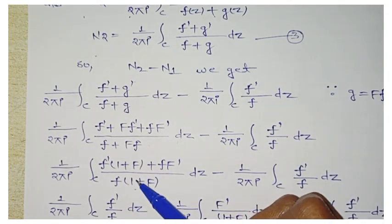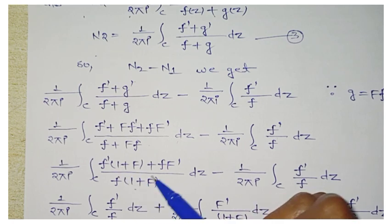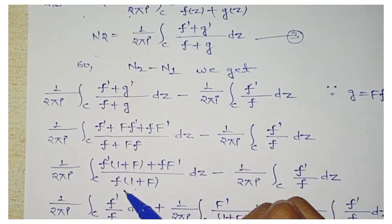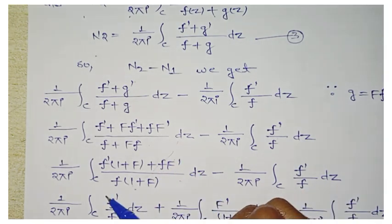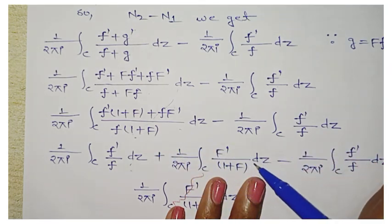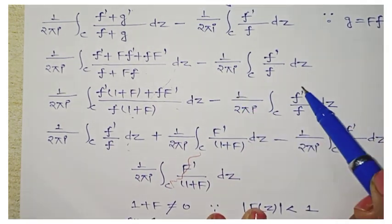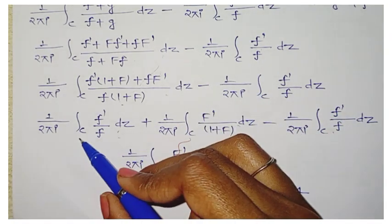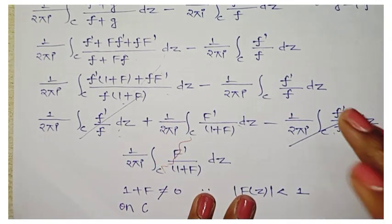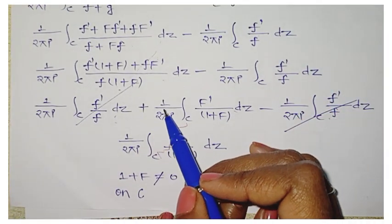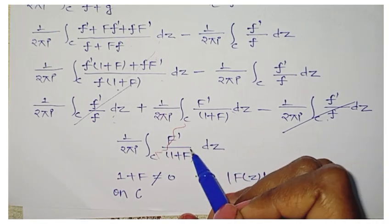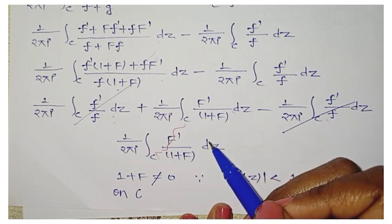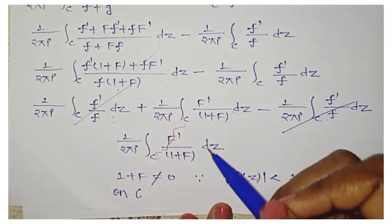Since the denominator is (1+F), we can write it under both terms. When (1+F) is in the denominator of one term, (1+F) cancels, giving f'/f · dz. In the other term, small f cancels, giving f'/(1+F) · dz. The two identical terms cancel out, leaving: (1/2πi) ∮ F'/(1+F) dz. Note that (1+F) must not equal zero — if it does, the value becomes infinity and cannot be solved.